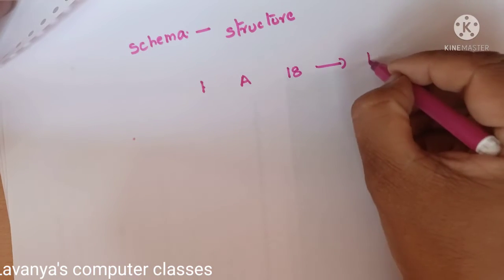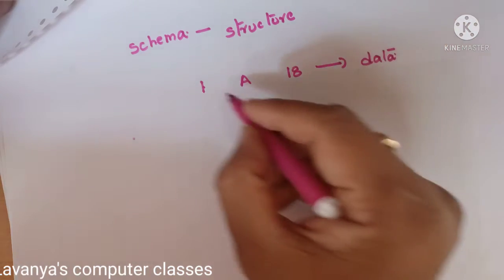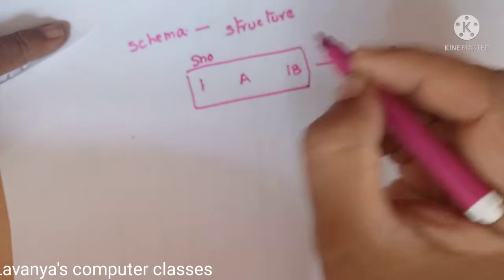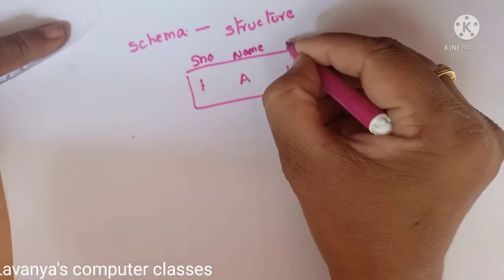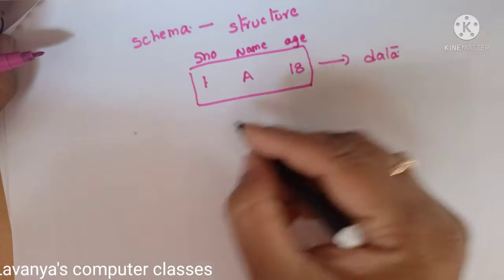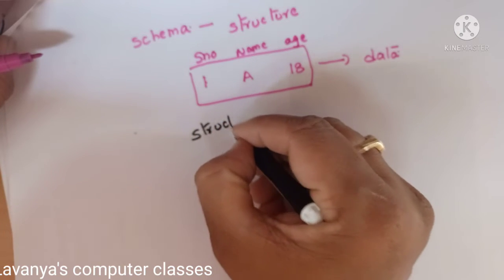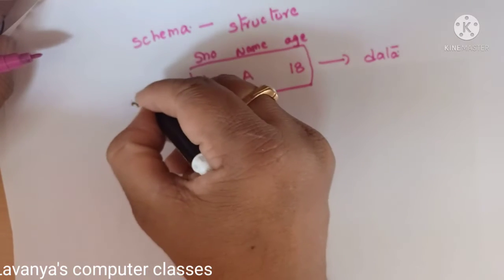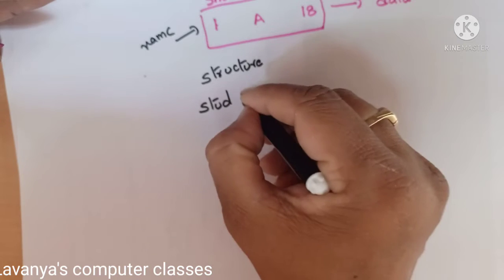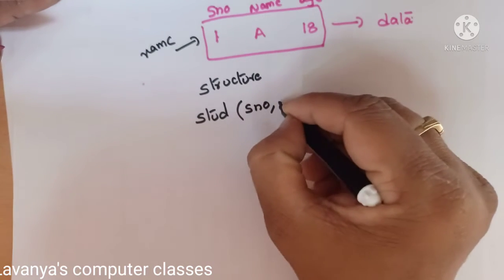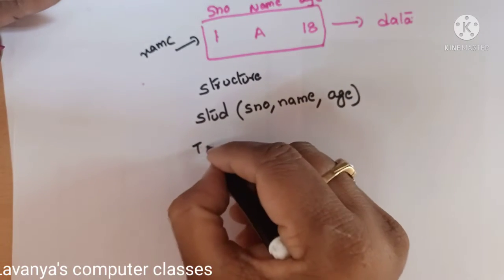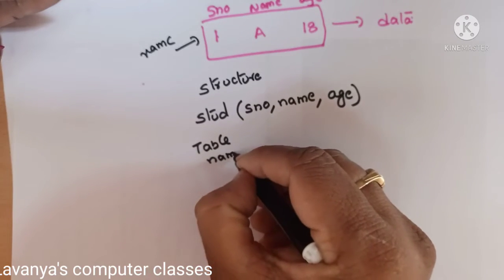For example, I have data like 1, A, and 18. Here, 1 indicates the serial number, A indicates the name of the student, and 18 indicates the student age. If data is stored in this format, that is called a schema. The table name is 'student,' and the fields are serial number, S-name, and age. So 1 is stored in serial number, A is stored in student name, and 18 is stored in age.